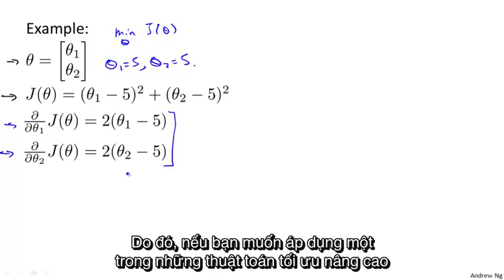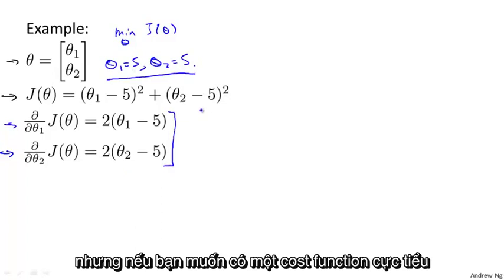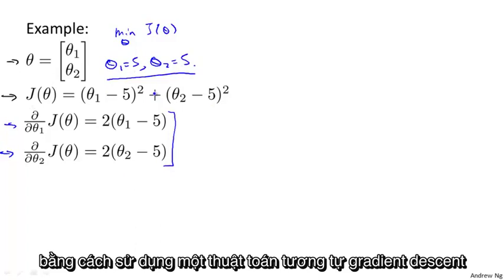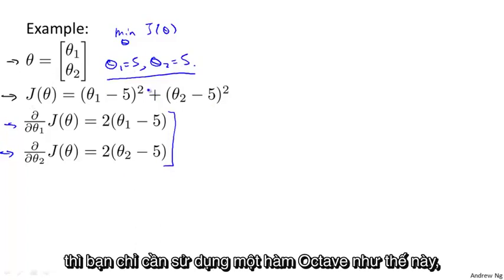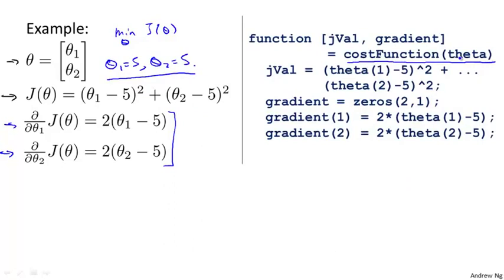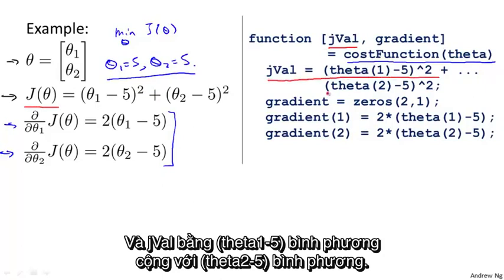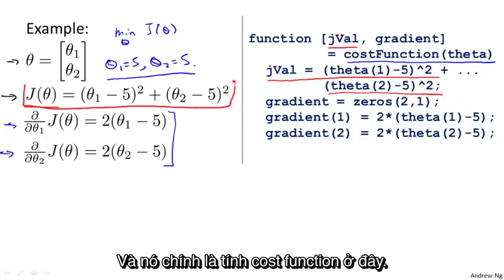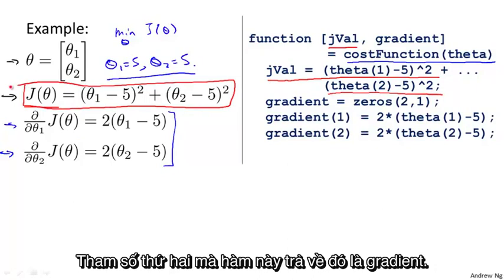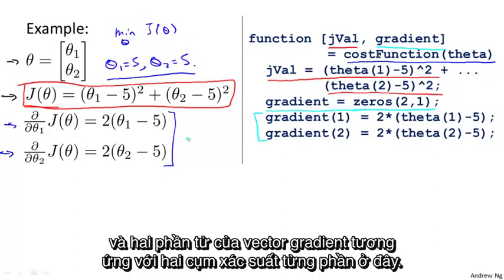So, if you want to apply one of the advanced optimization algorithms to minimize this cost function J — if we want to find the minimum numerically using something like gradient descent, but preferably more advanced than gradient descent — what you would do is implement an Octave function like this. We implement a cost function theta function. What this does is it returns two arguments. The first, JVal, is how we would compute the cost function J, so JVal equals (theta one minus 5) squared plus (theta two minus 5) squared — it's just computing this cost function. The second argument that this function returns is gradient. Gradient is going to be a two-by-one vector, and the two elements of the gradient vector correspond to the two partial derivative terms.